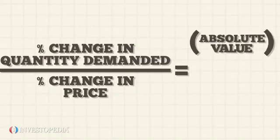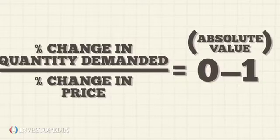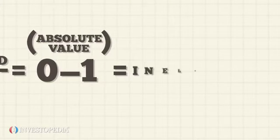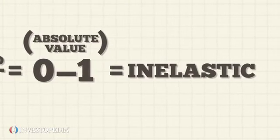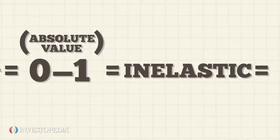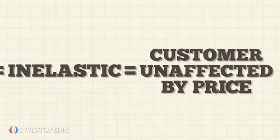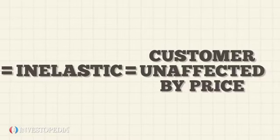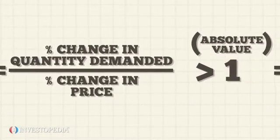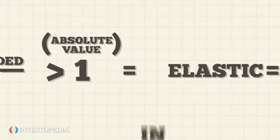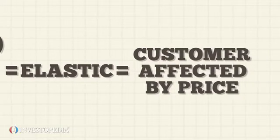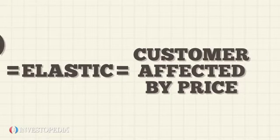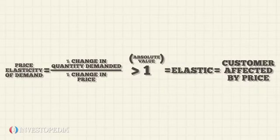A number between 0 and 1 indicates an inelastic good. In other words, the customer is relatively unaffected by the new price. Numbers above 1 indicate elastic demand, where shopping behavior changes significantly.